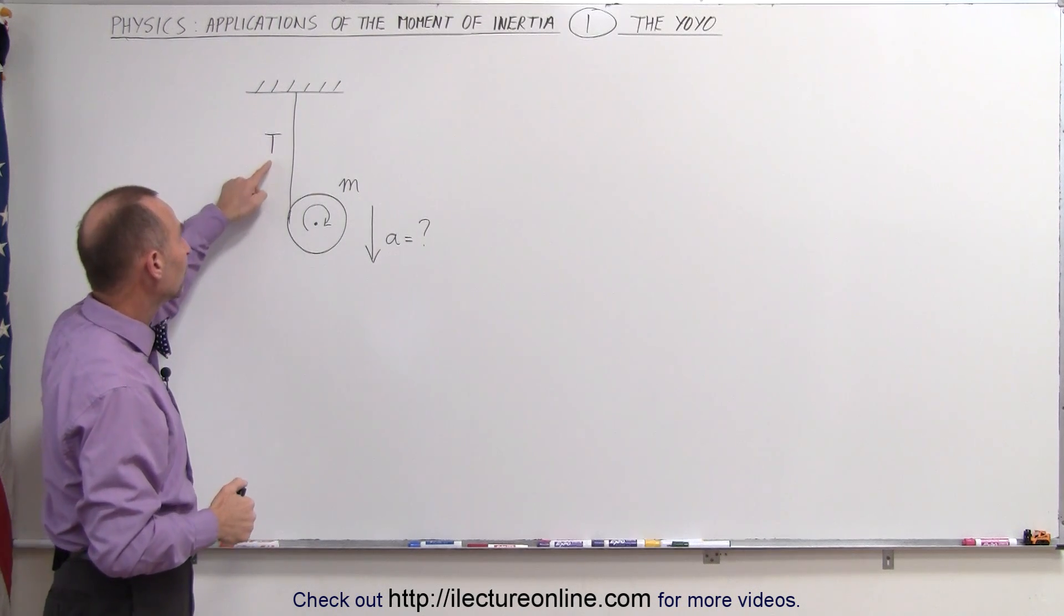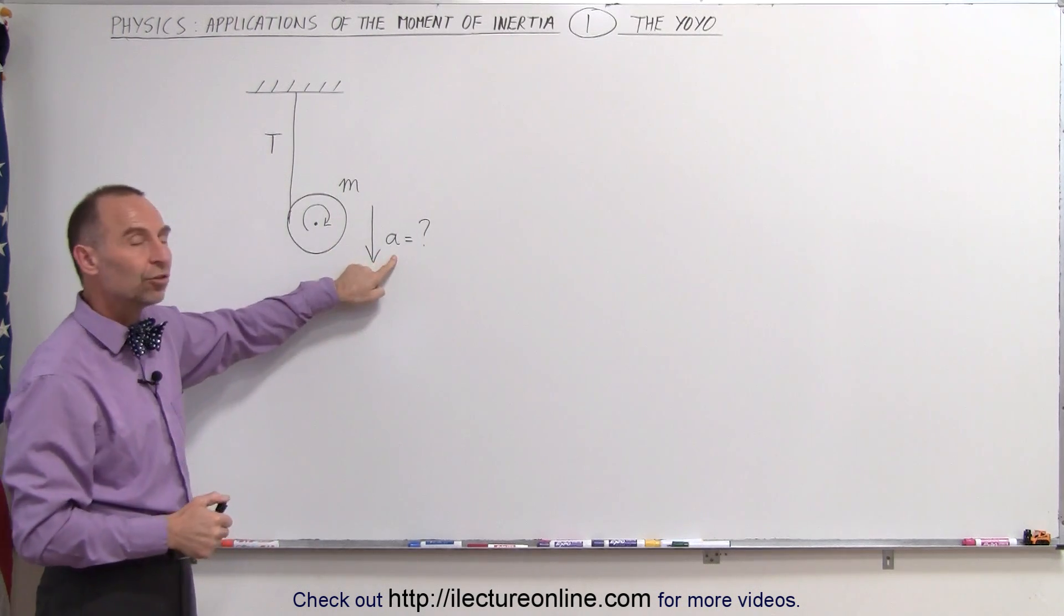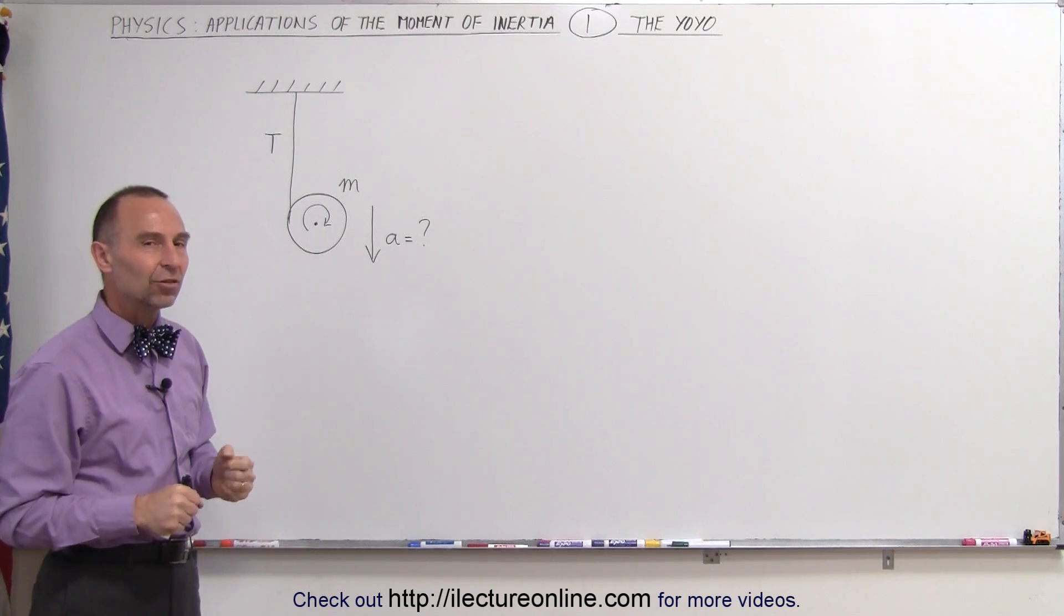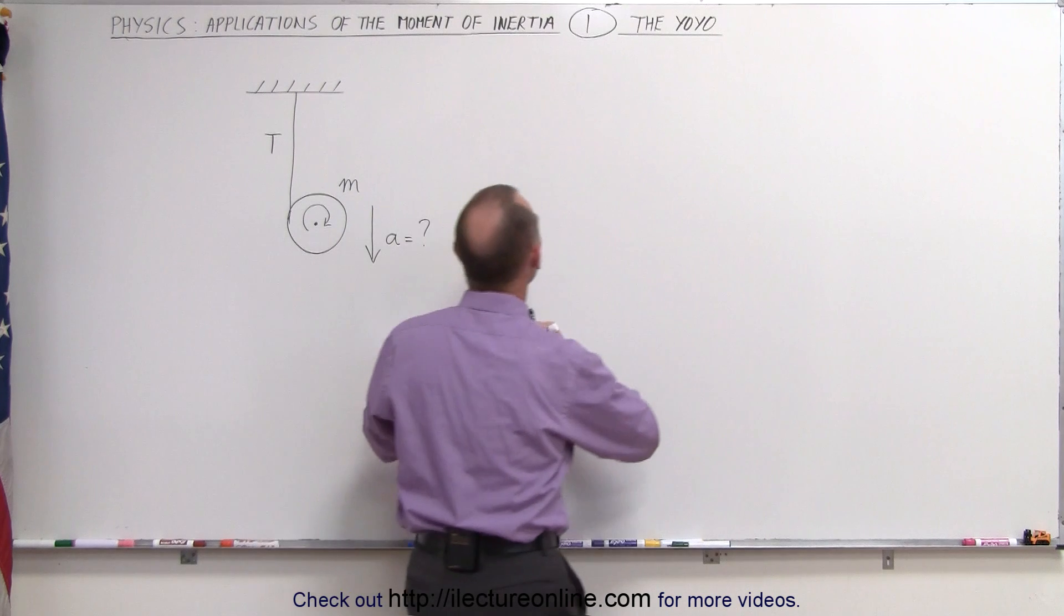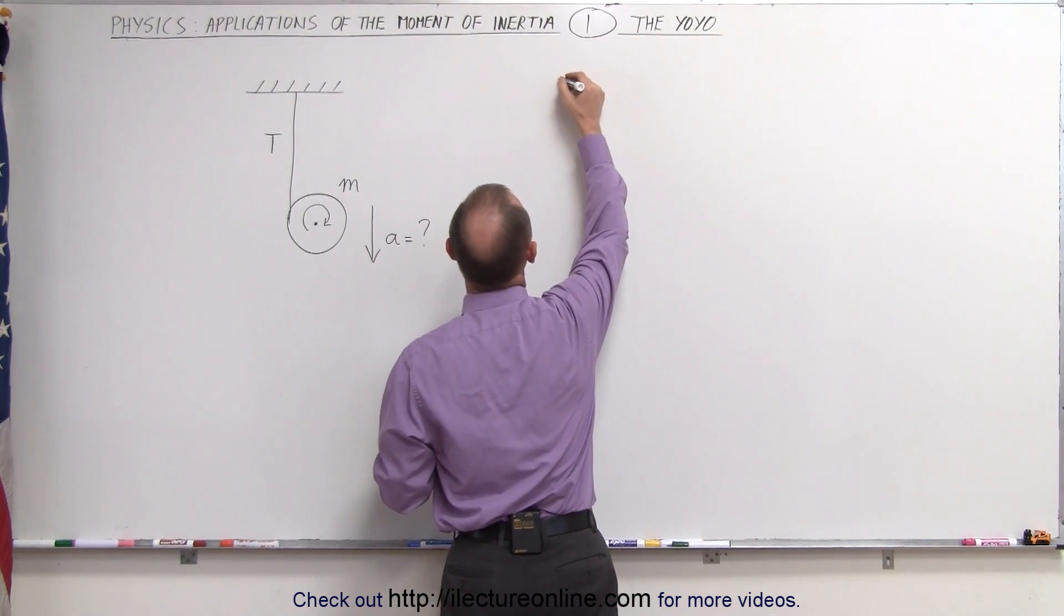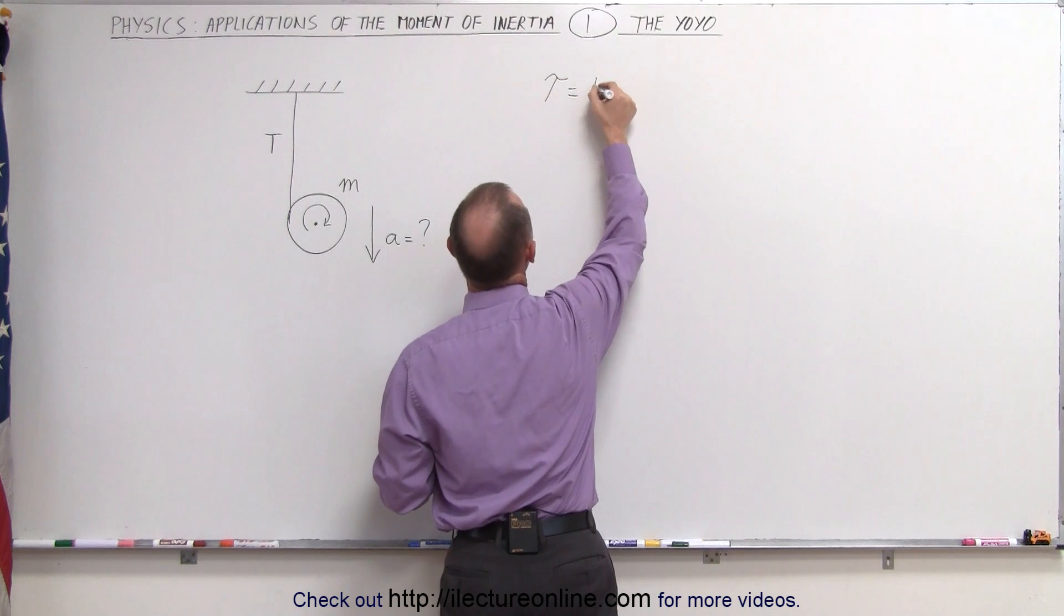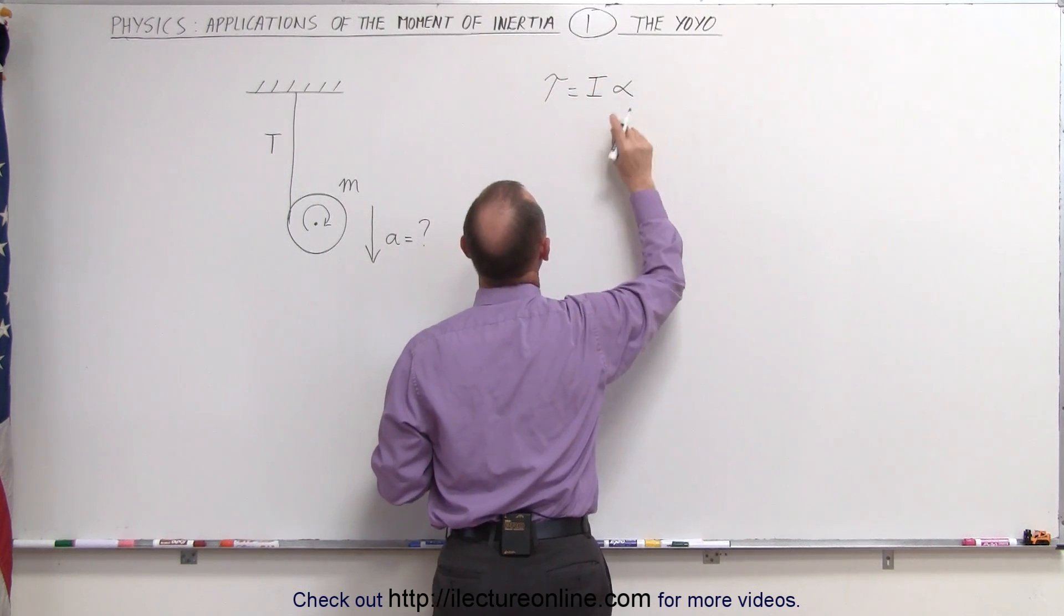In order to find that we need to solve for both the tension and acceleration. We need two equations and then we're going to solve the two equations simultaneously. The first equation we're going to use the rotational equivalent of F equals MA which is the torque equals the moment of inertia times the angular acceleration.